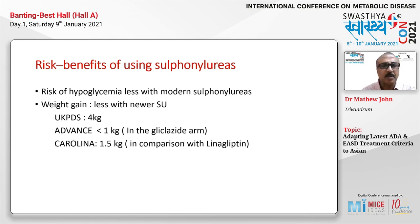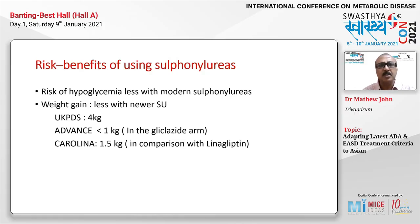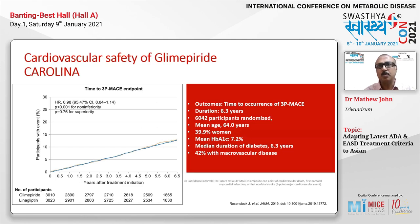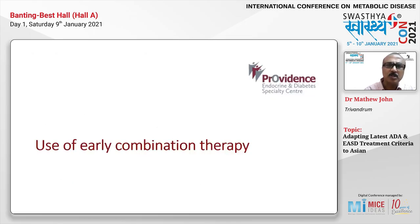Modern sulfonylureas carry a much lower hypoglycemia risk. For weight gain, data from the UKPDS showed 4 kg gain in newly diagnosed patients, but newer sulfonylureas like gliclazide (used in ADVANCE) and glimepiride (used in CAROLINA) show only approximately 1 to 1.5 kg weight gain — not significant for Indian patients who generally have normal body weight. Data from the CAROLINA trial also demonstrates that glimepiride's cardiovascular safety, at least for three-point MACE, is not significantly different from linagliptin.